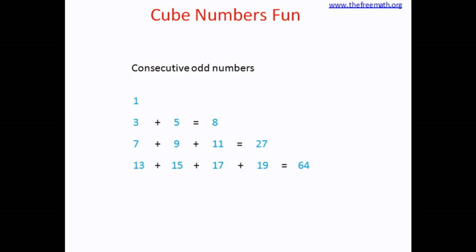Then 7 plus 9 is 16. 16 plus 11 equals 27 and then on the last line 13 plus 15 plus 17 equals 45 and 45 plus 19 equals 64.